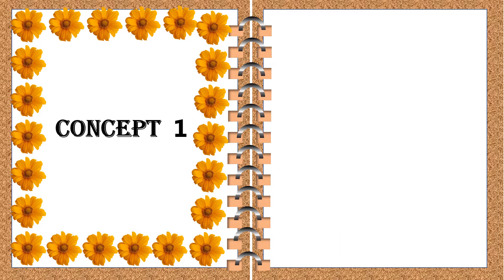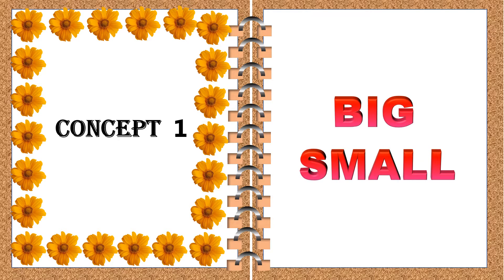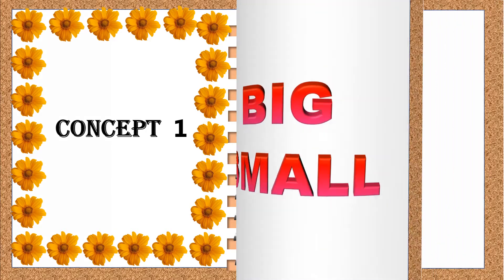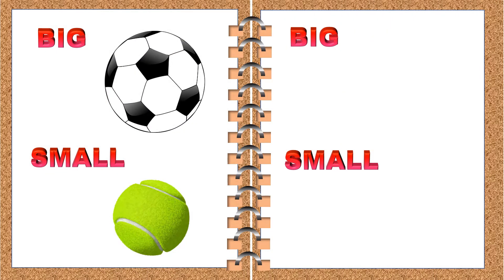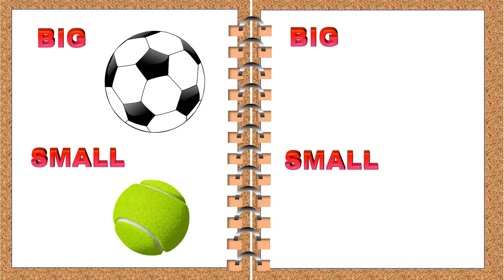So we have our first concept. The book is going to teach us the first concept of big and small. The book is now showing us different examples to understand the concept of big and small. This football is big. This tennis ball is small. Big ball and small ball.